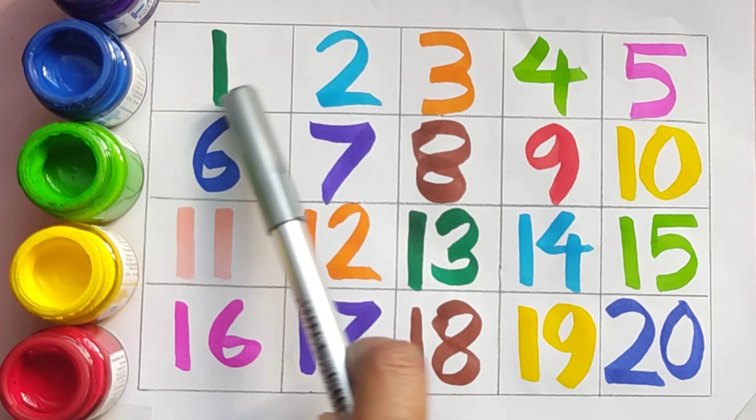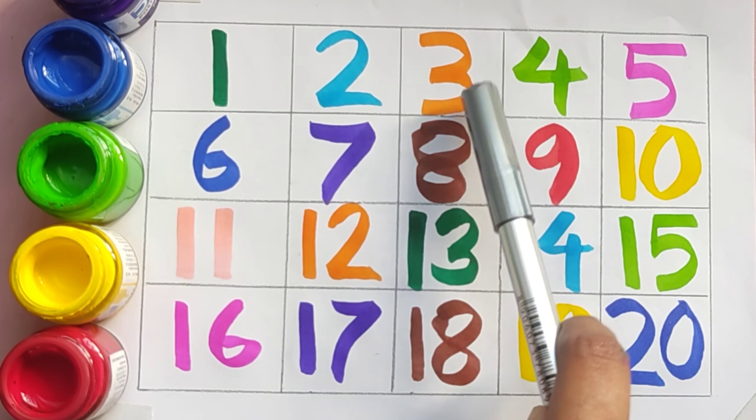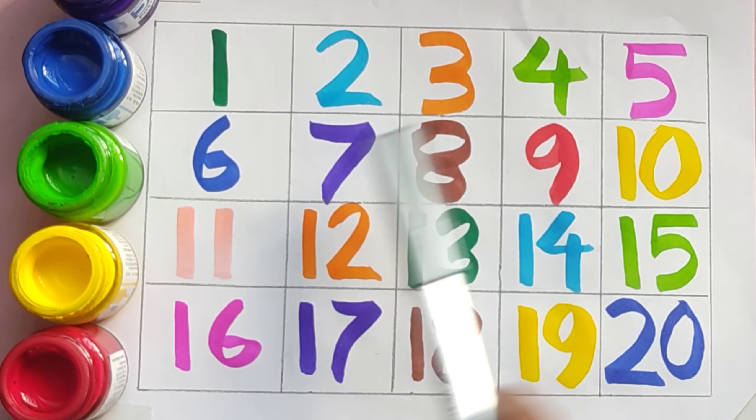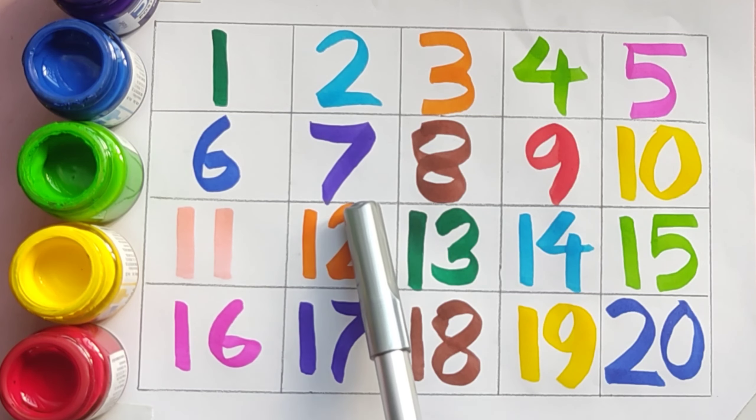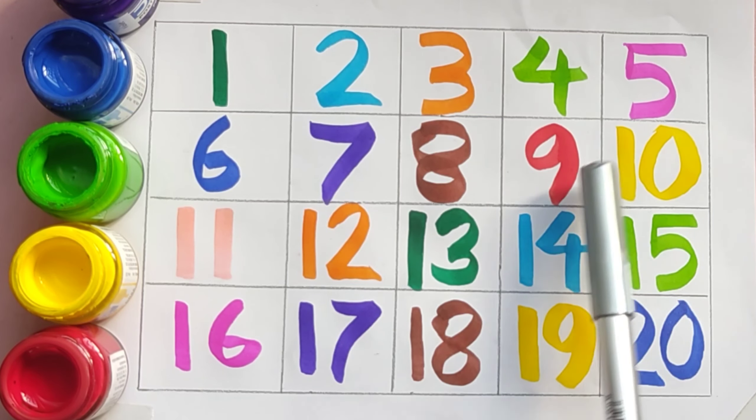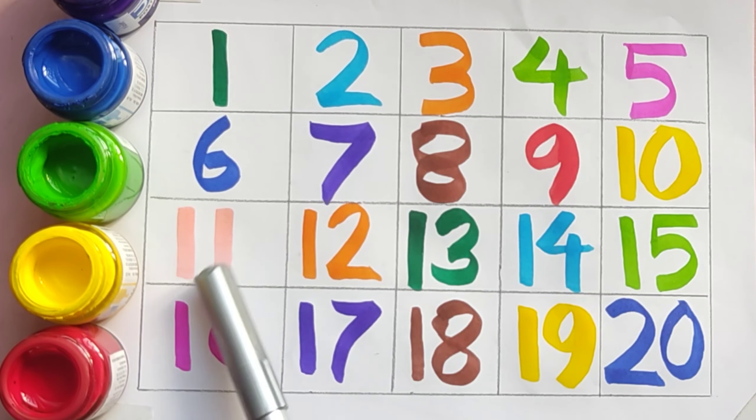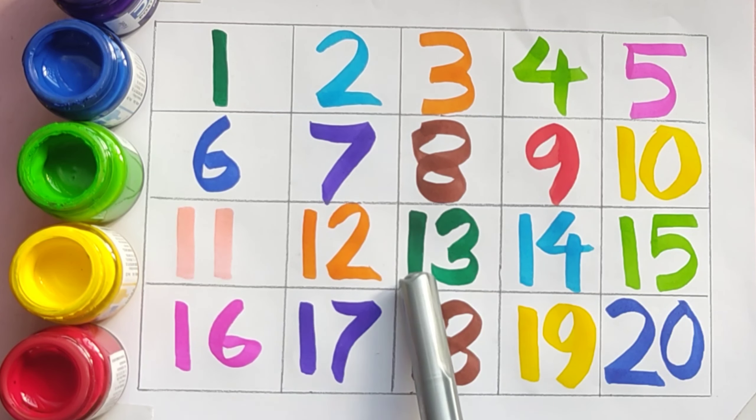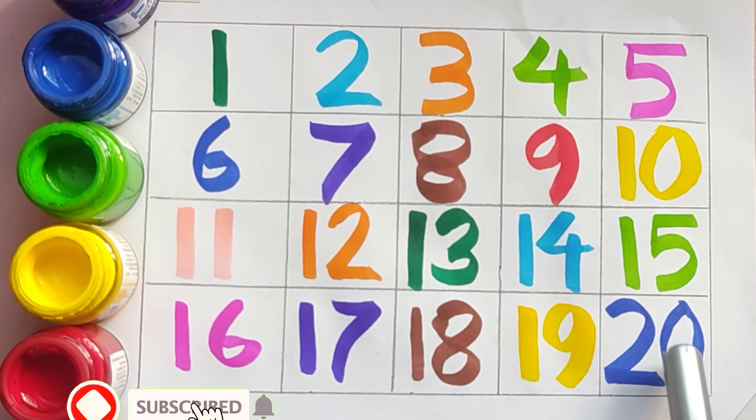One, two, three, four, five, six, seven, eight, nine, ten, eleven, twelve, thirteen, fourteen, fifteen, sixteen, seventeen, eighteen, nineteen, twenty.